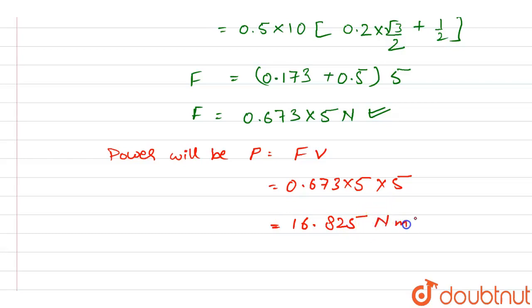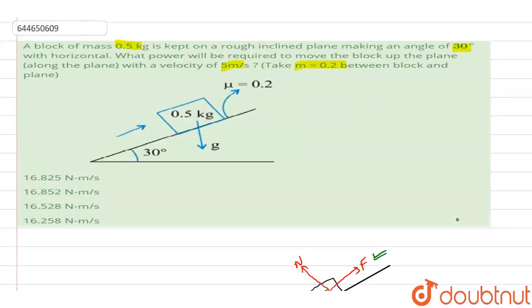So this is the correct answer. Let's look in the options. 16.825 Newton meters per second, option number A is correct.